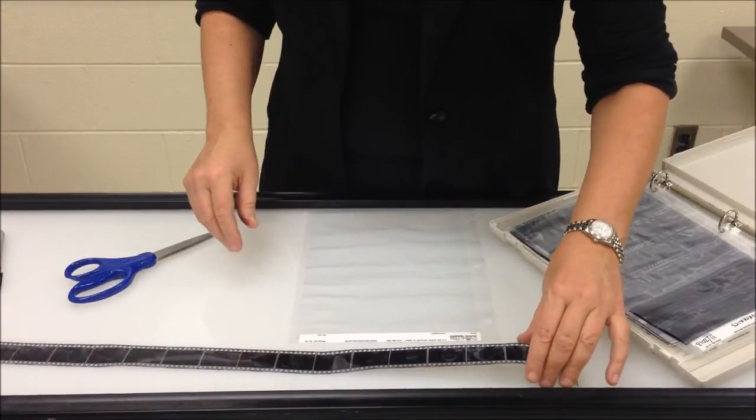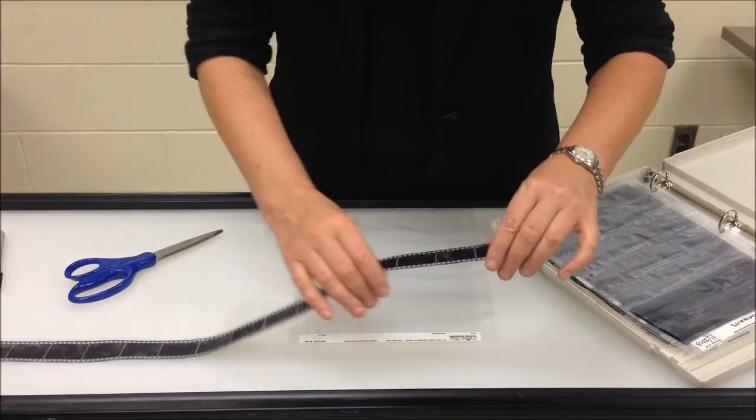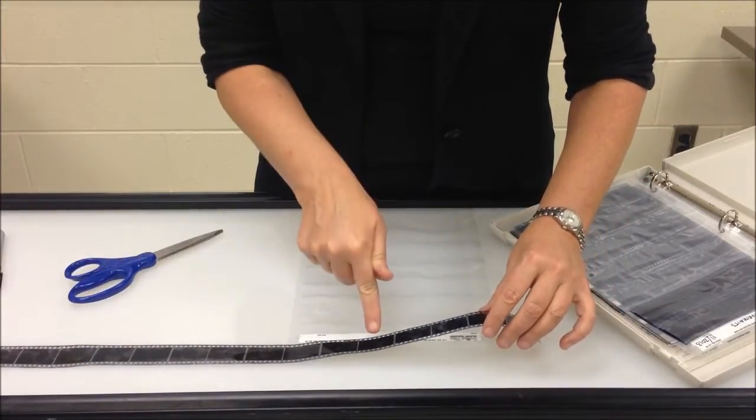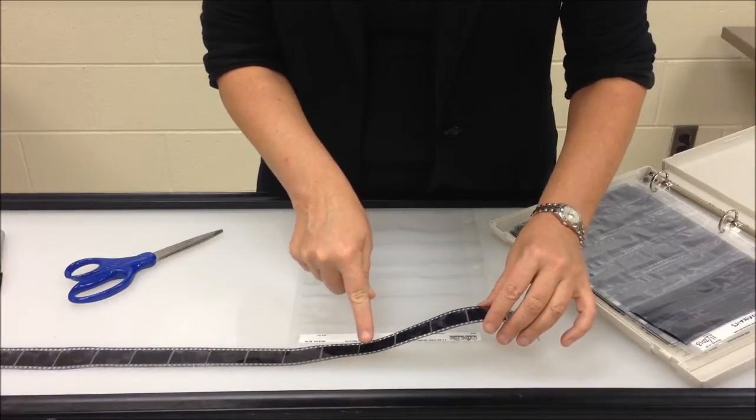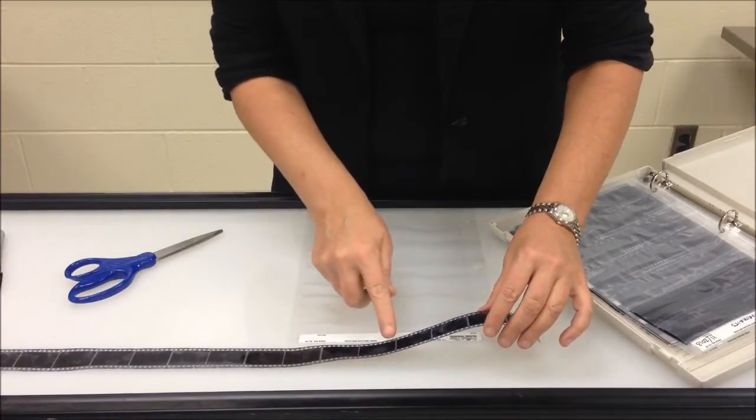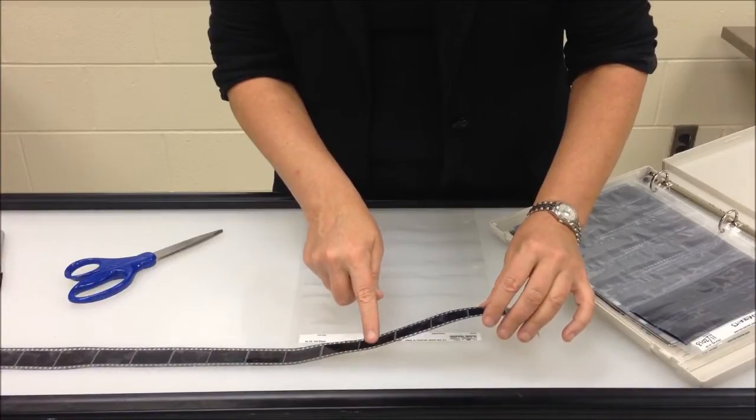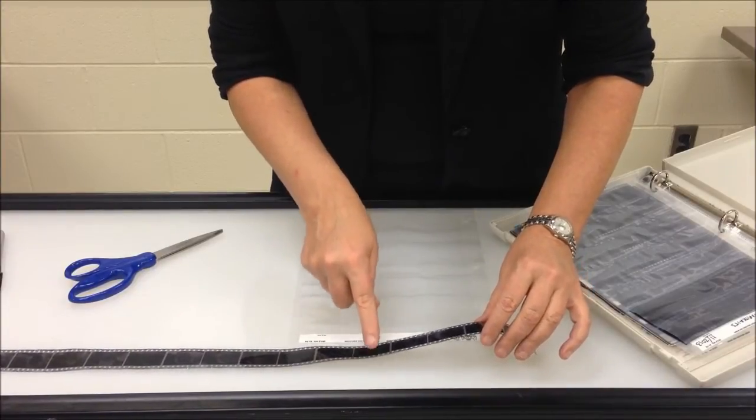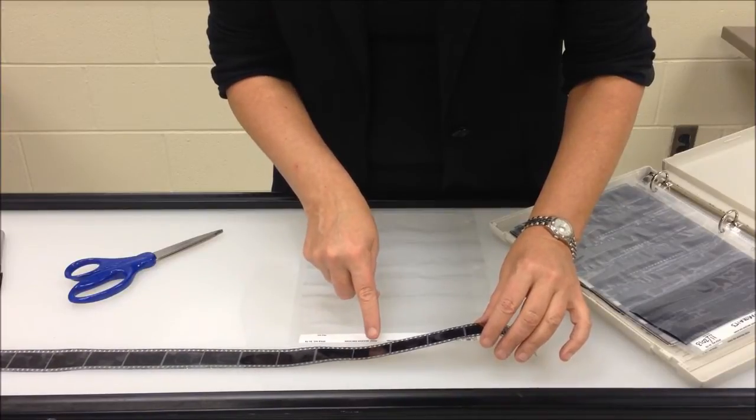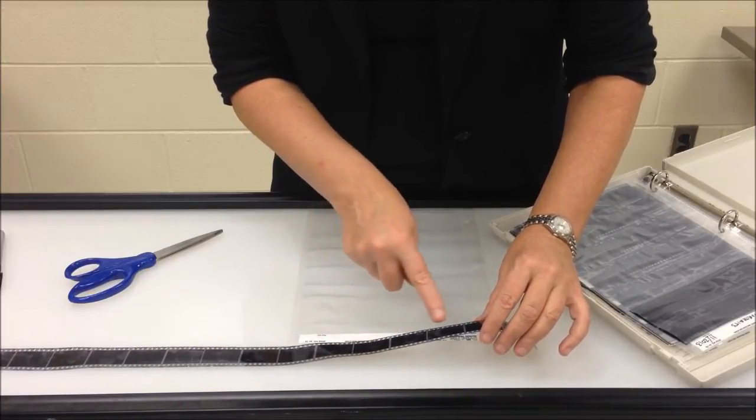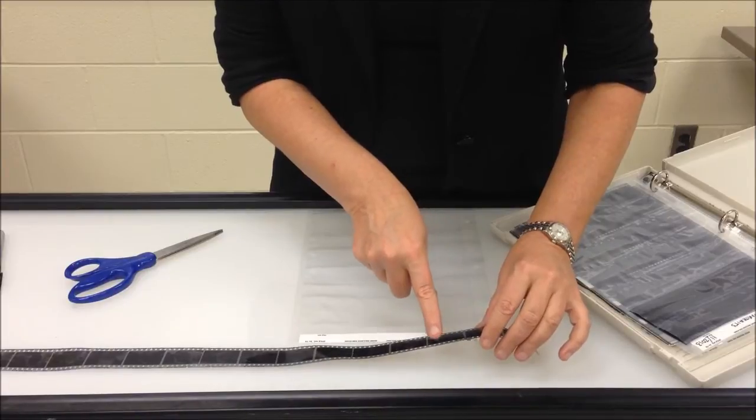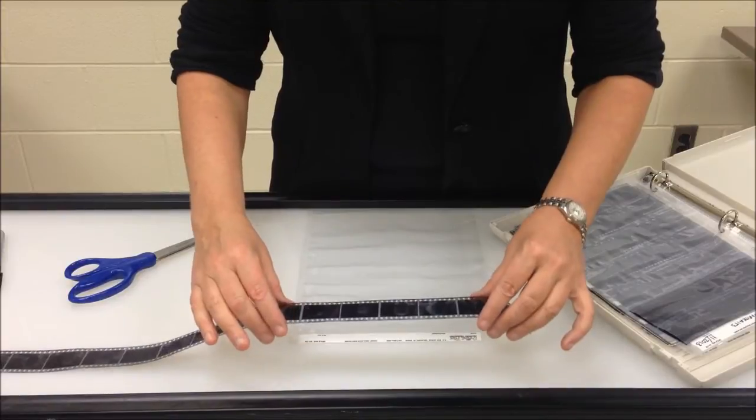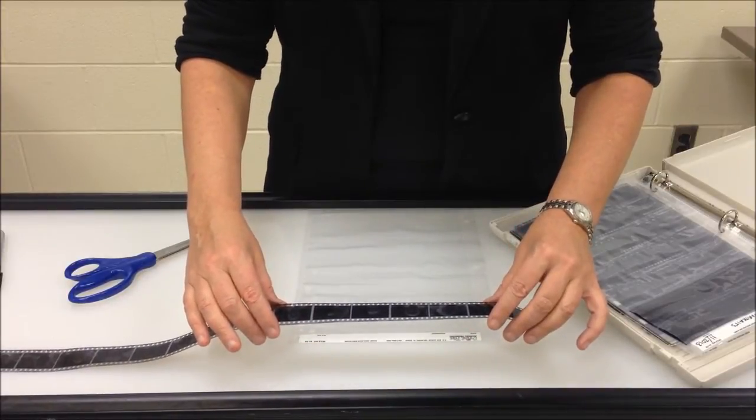To find the emulsion side of your film, place your film on the light table and look through the film. At the top you should be able to read the manufacturer and brand name of the film and other information. You should be able to read it properly and the numbers as well. On this film it says Ilford HP5 Plus. That indicates the film is right reading emulsion side down.